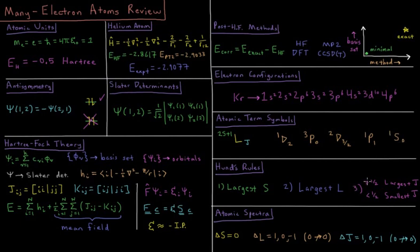And then lastly, looking at j, if we're more than half filled in our subshell, we look for the largest j, and if we're less than half filled, we are looking for the smallest j.